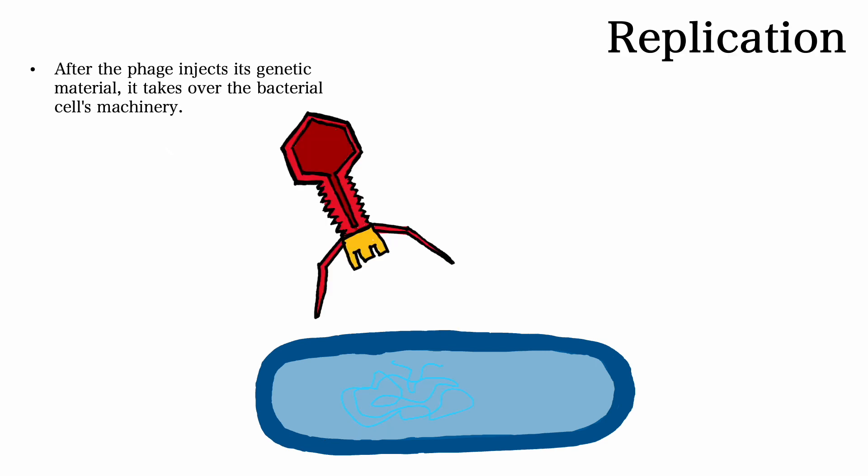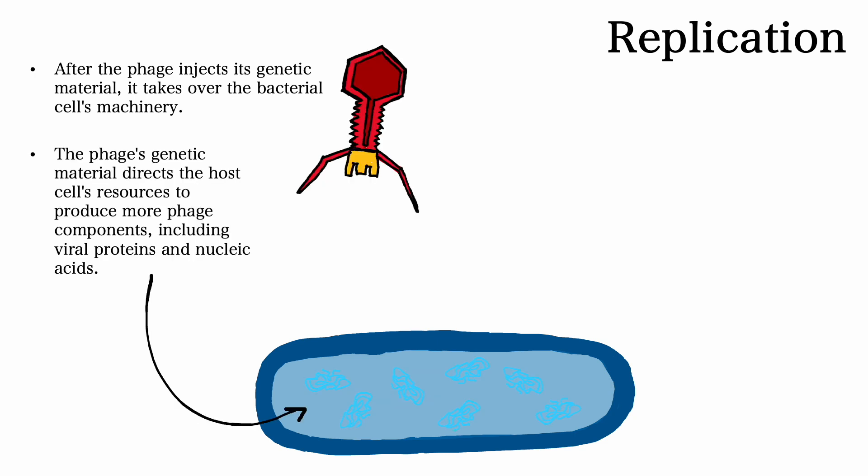Then there's replication. After the phage injects its genetic material, it takes over the bacterial cell's machinery. The phage's genetic material directs the host cell's resources to produce more phage components, including viral proteins and nucleic acids.